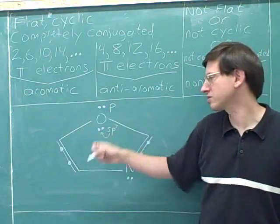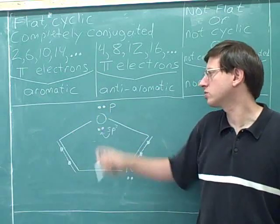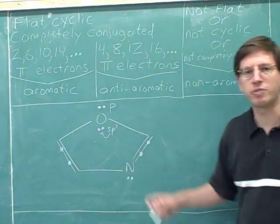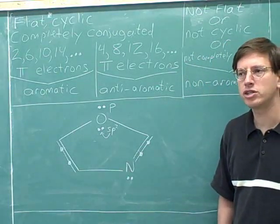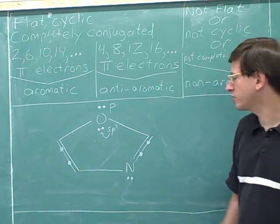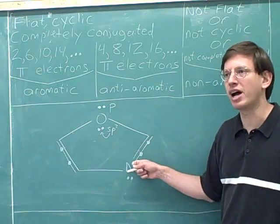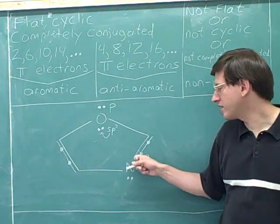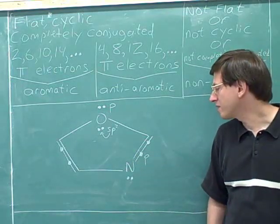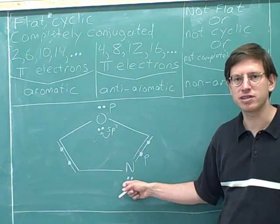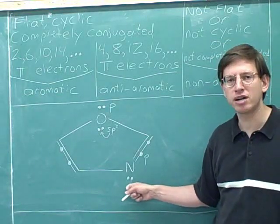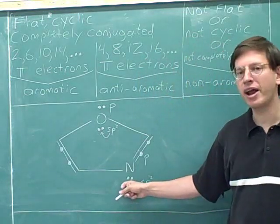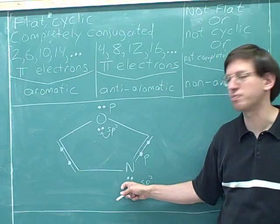Remember that pi electrons have to be in p orbitals, so this oxygen atom is contributing two pi electrons. This nitrogen is sp2 hybridized, so it has one p orbital. It must be using its p orbital for this pi bond, since pi bonds are formed from p orbitals. So the nitrogen is already using its p orbital for this pi bond, which means it does not have any p orbitals left over for this lone pair. So again, this lone pair must be in an sp2 orbital.